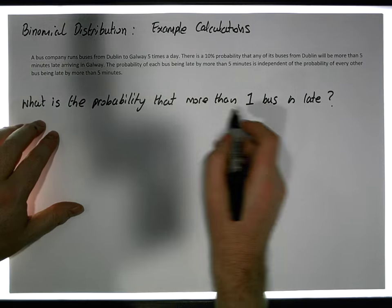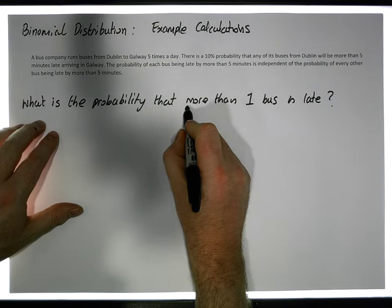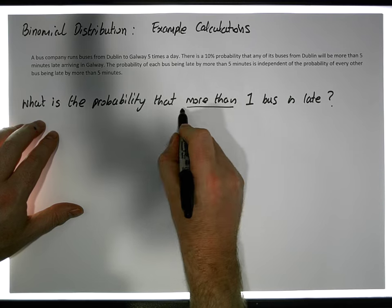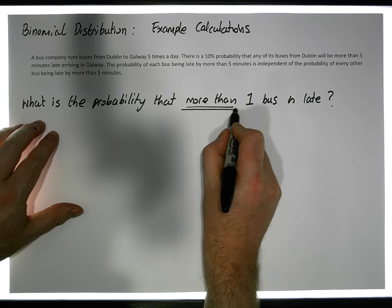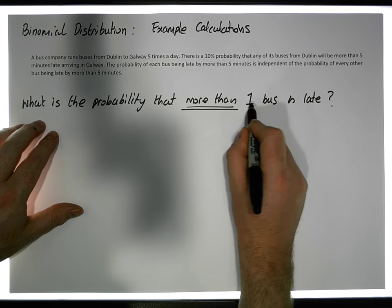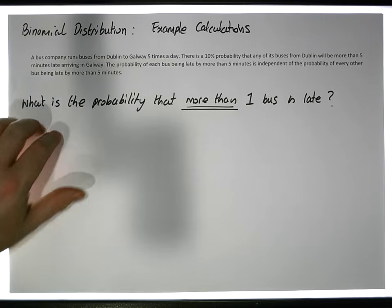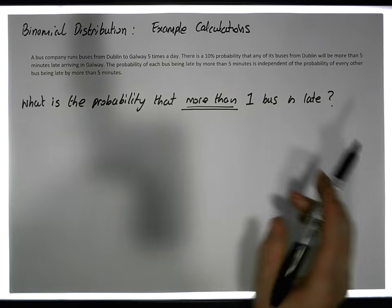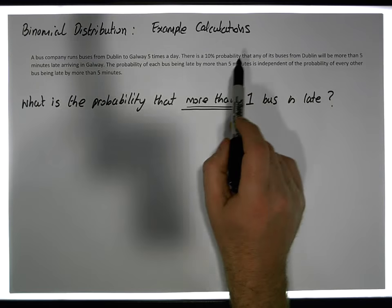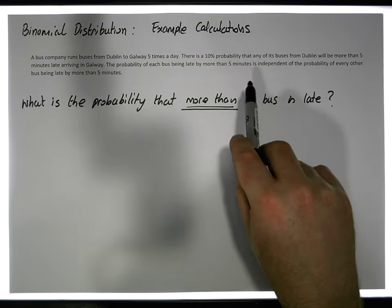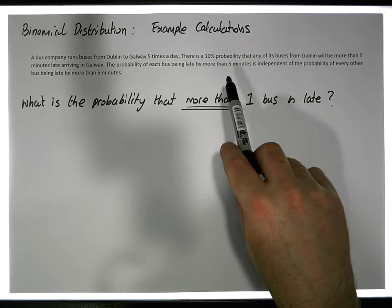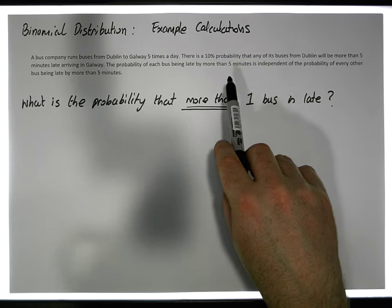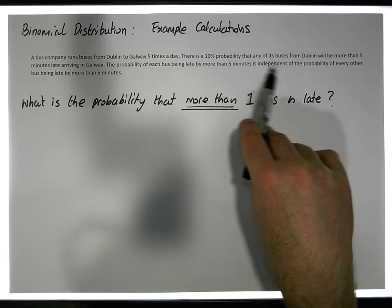what is the probability that — and 'more than' is important here — that more than one bus is late on any particular day? Now in this situation, what we have is known as a binomial probability